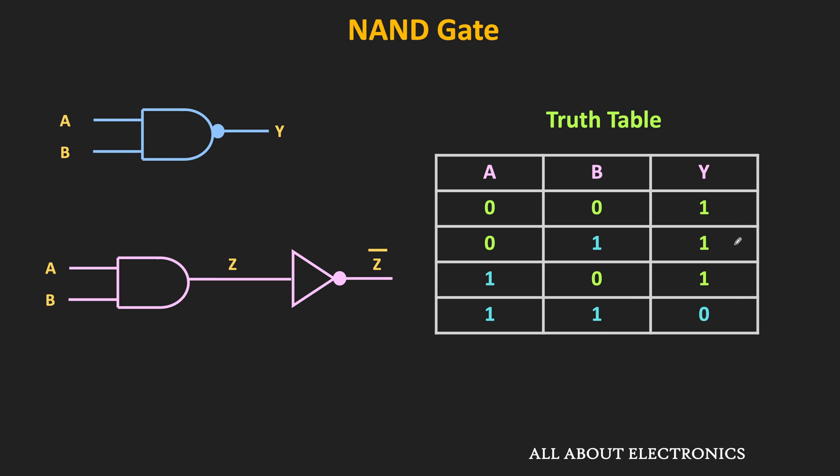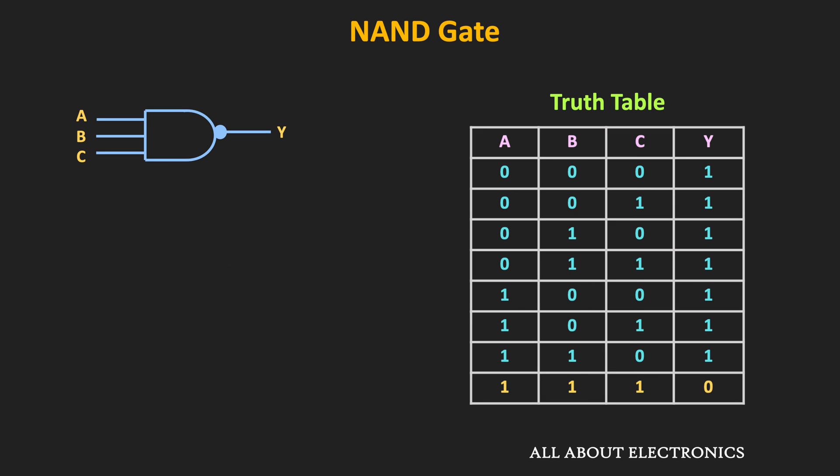Similar to the two-input NAND gate, we can also have a NAND gate with more than two inputs. In that case, the output will be low whenever all inputs are high; for all other combinations, the output of the NAND gate will be equal to high.